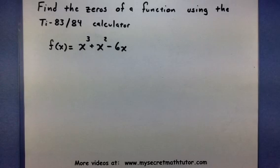Hello and welcome. In this example, we want to find the zeros of a function using our TI-83 or 84 calculator. Now the example I've cooked up for this problem is f(x) = x³ + x² - 6x. Now, remember those zeros are places where this function will cross the x-axis.